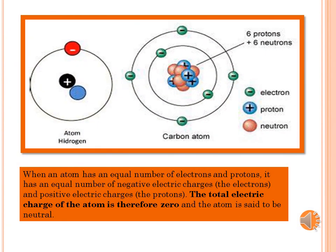When an atom has an equal number of electrons and protons, it has an equal number of negative electric charges (the electrons) and positive electric charges. The total electric charge of the atom is therefore zero and the atom is said to be neutral.